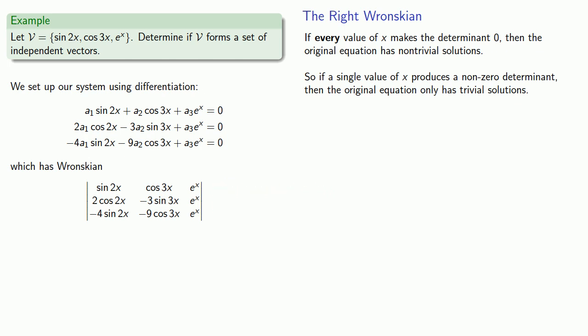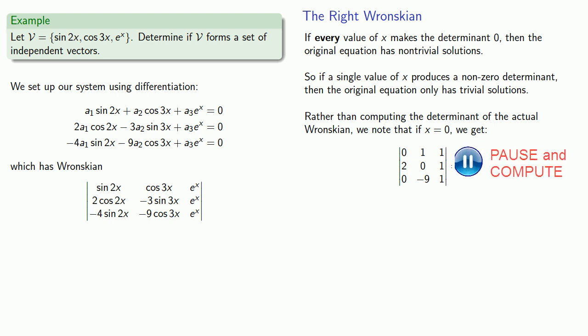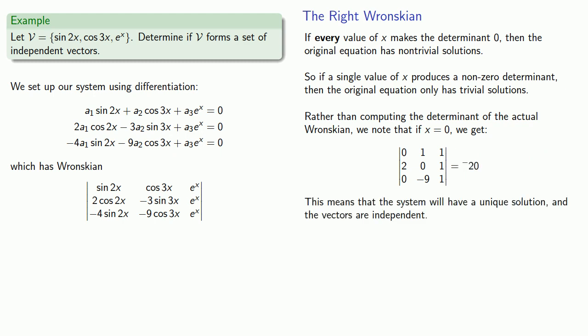Rather than computing the full Wronskian determinant, we note that at x = 0 the determinant simplifies considerably. We calculate the determinant of this simpler matrix. Since the determinant is not equal to zero, the system has a unique solution, and our vectors — sin(2x), cos(3x), and e^x — are indeed independent.